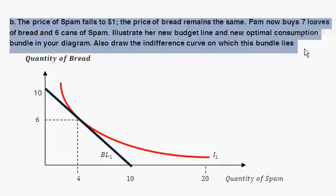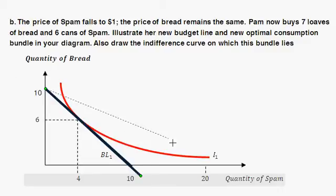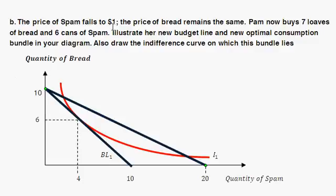Moving on to part B. Part B tells us that the price of spam falls to $1, the price of bread remains the same. Pam now buys a new optimal consumption bundle of seven loaves of bread and six cans of spam. We need to illustrate the new budget line, the new optimal consumption bundle, and the new indifference curve. Since income hasn't changed, if Pam were to spend all $20 on bread, she'd still buy 10 loaves of bread — so that intercept stays. But since spam is now $1, if she spent all $20 on spam, she could buy 20 cans.